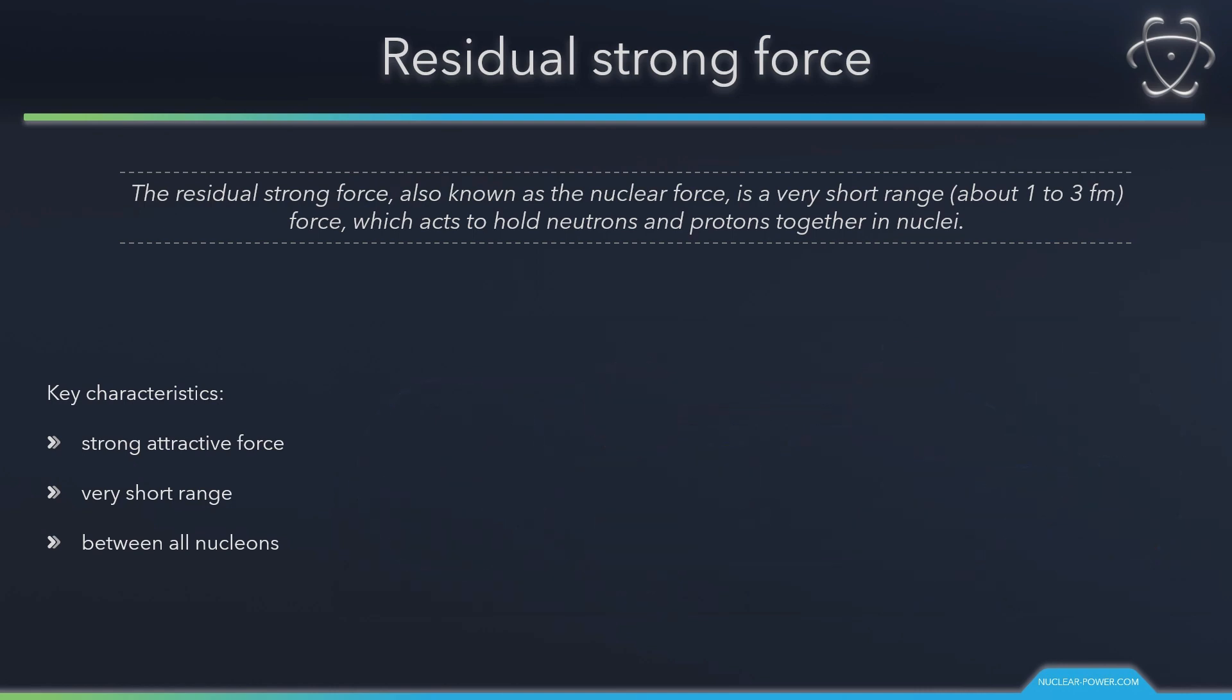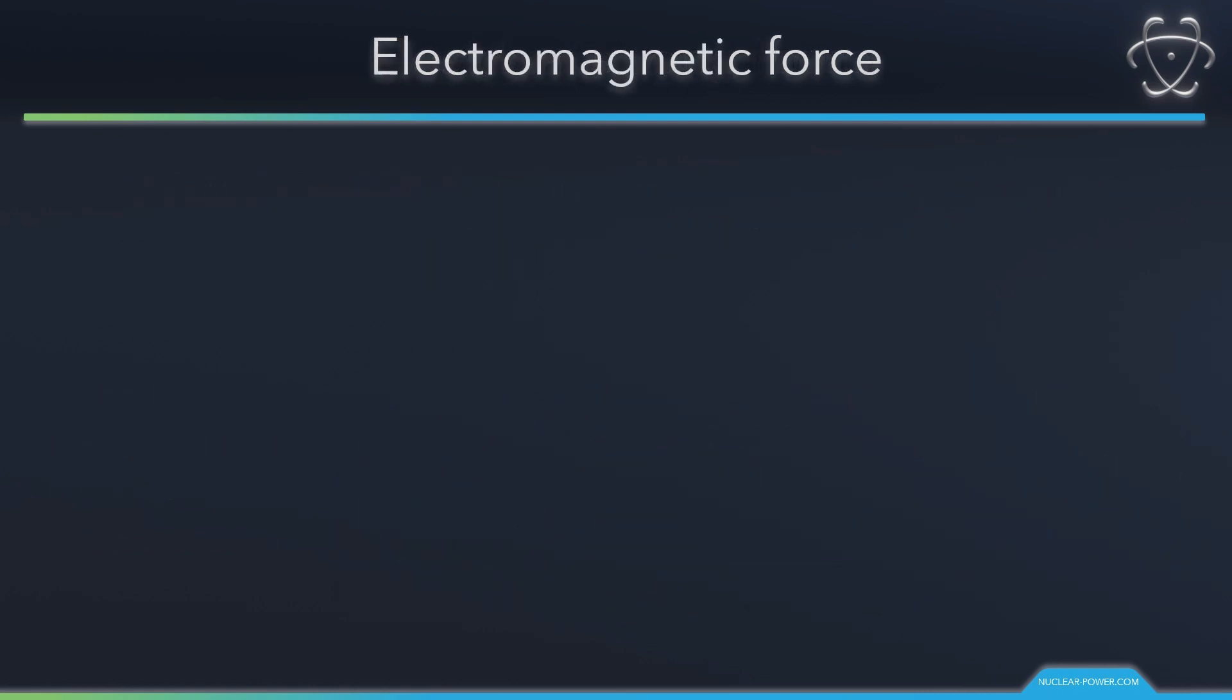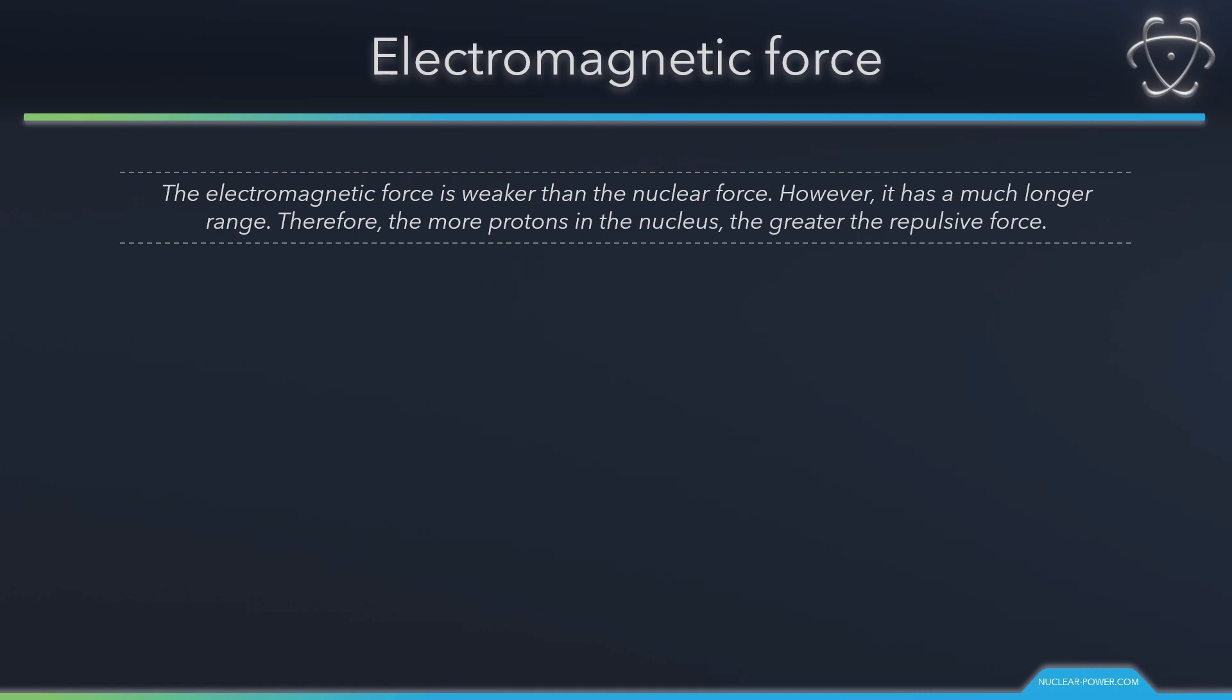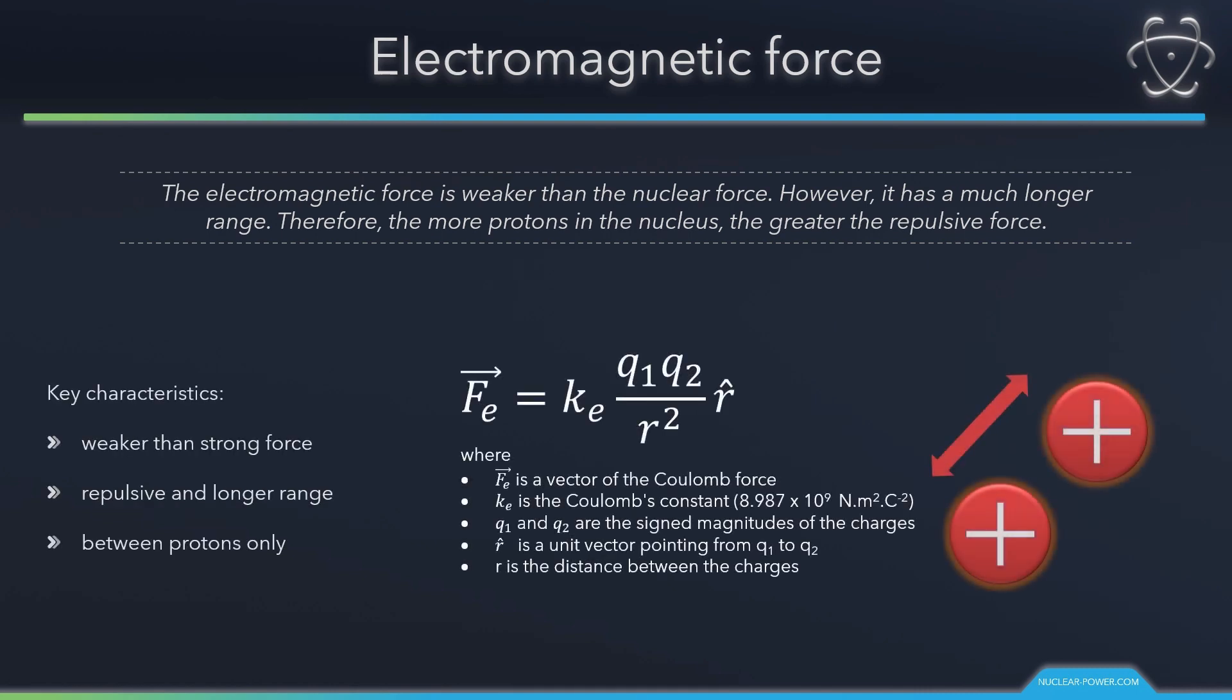The electromagnetic force is responsible for all electromagnetic processes. It acts between electrically charged particles. Coulomb's law can be used to calculate the force between charged particles, in this case, between two protons. The electrostatic force is directly proportional to the electrical charges of the two particles and inversely proportional to the square of the distance between the particles. The electromagnetic force is weaker than the nuclear force. However, it has a much longer range. Therefore, the more protons in the nucleus, the greater the repulsive force.